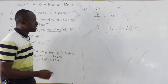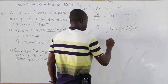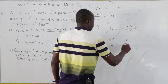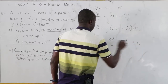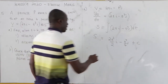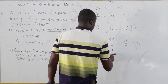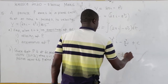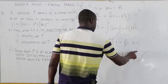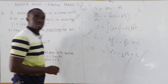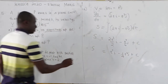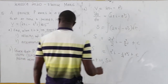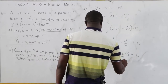Integrating 2ti minus t³j dt, we get 2t²/2 i minus t⁴/4 j plus a constant of integration C. This simplifies to t²i minus (1/4)t⁴j plus C.